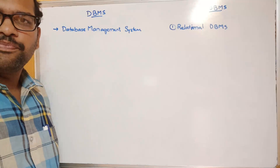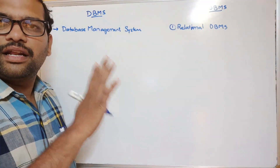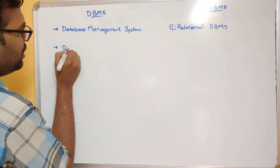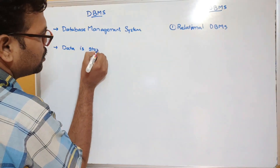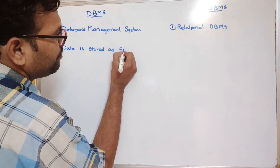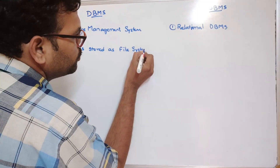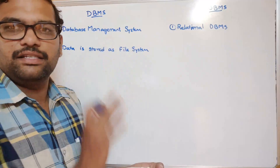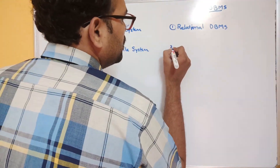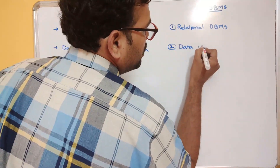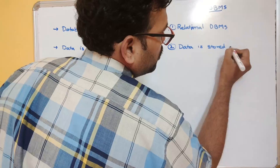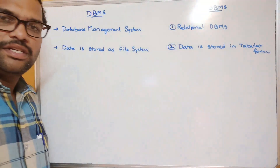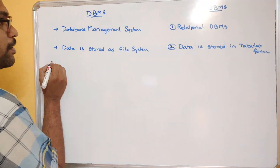Since we call it 'relational,' the data in RDBMS is stored in a tabular format. In DBMS, data is stored in file systems — usually in files on a hard disk stored in directories. In RDBMS, data is stored in tabular form, that is, in terms of rows and columns.